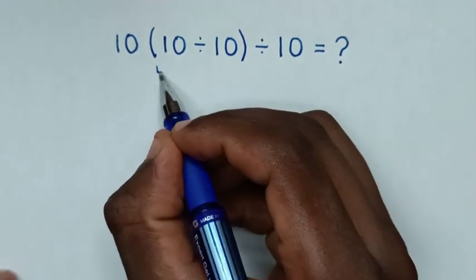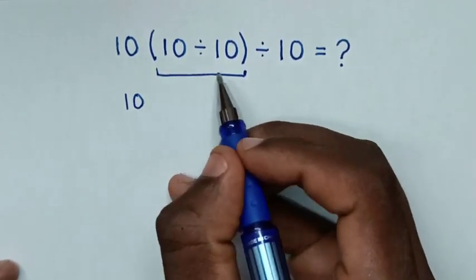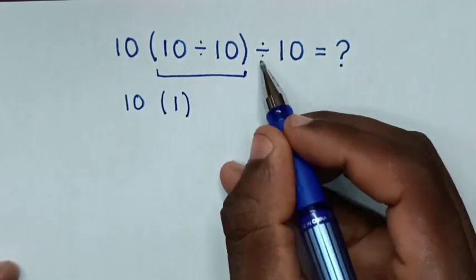So we start with here inside the bracket. 10 divided by 10 is 1. So bracket 1, then divide by 10.